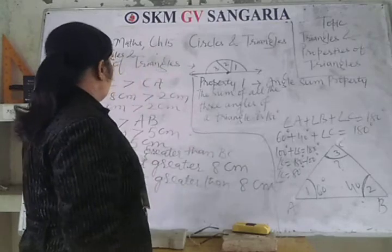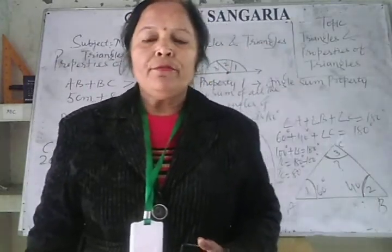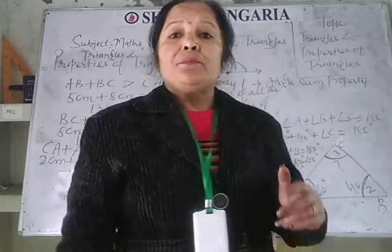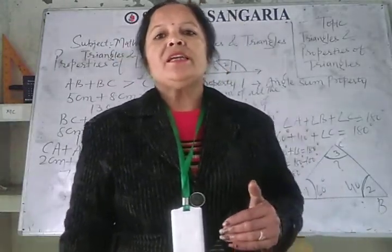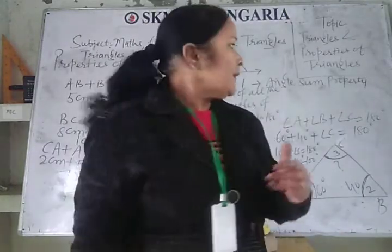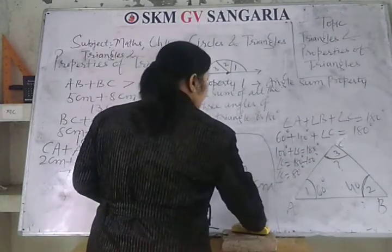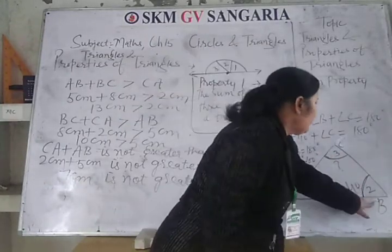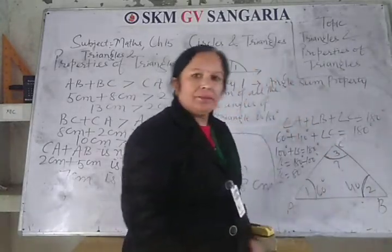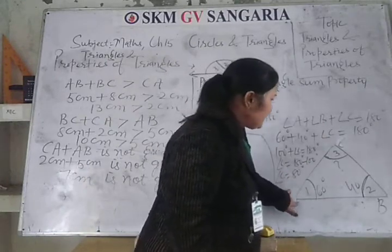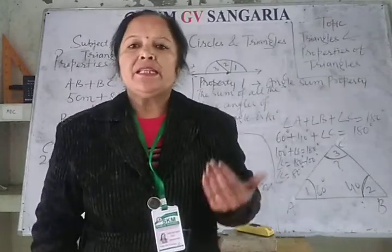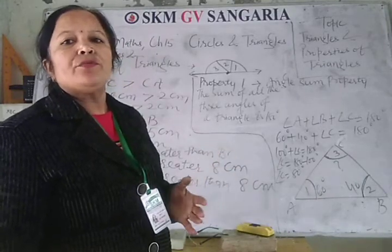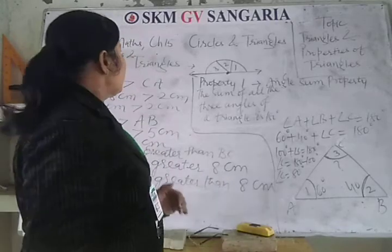Property 2 states that the sum of any two sides of a triangle is always greater than the third side. For triangle ABC: AB + BC > CA, BC + CA > AB, and CA + AB > BC. The sum of the lengths of any two sides is always greater than the third side.